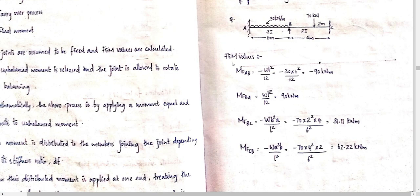The next thing is FEM values — Fixed End Moments for AB and BC spans. For span AB, which has a UDL, the formula is WL squared by 12. So MAB is minus WL squared by 12, where W is 30 and L is 6, giving minus 90 kN per m.